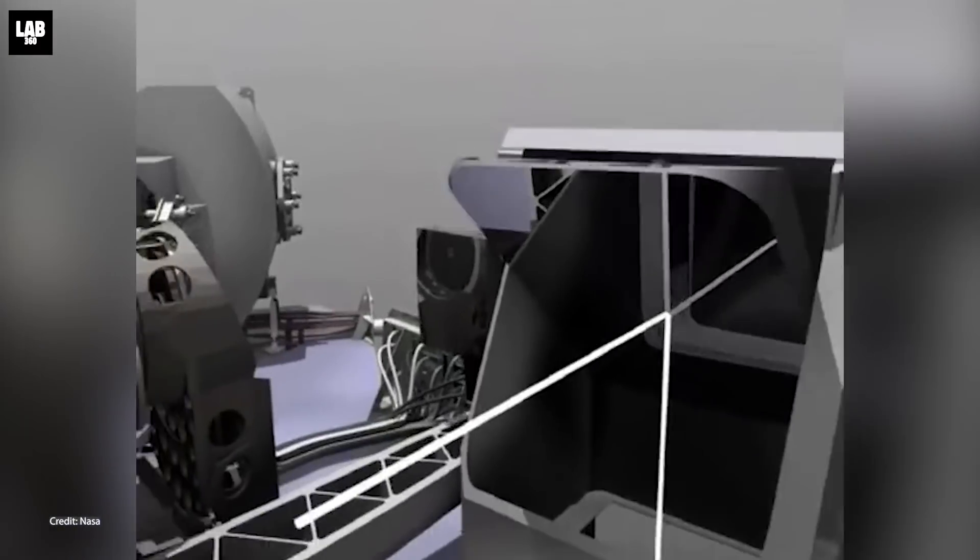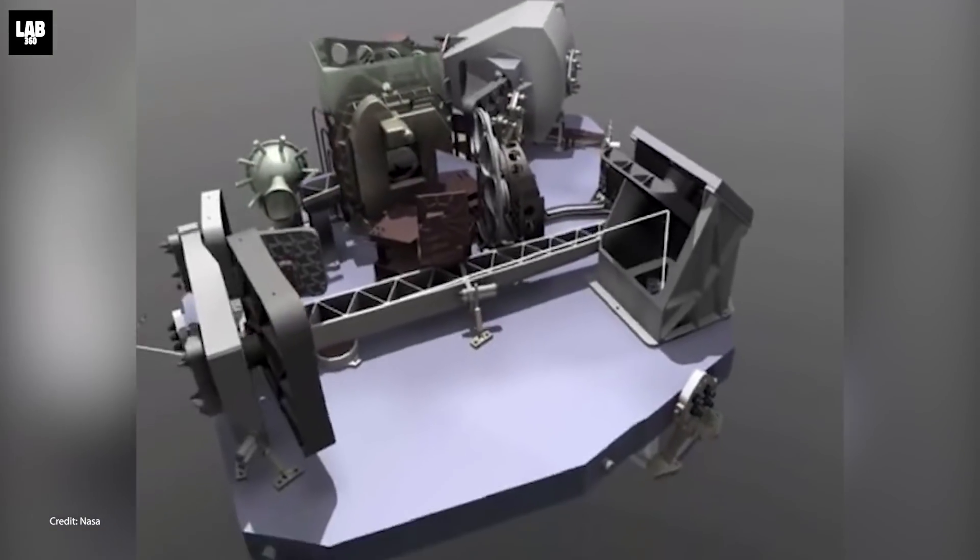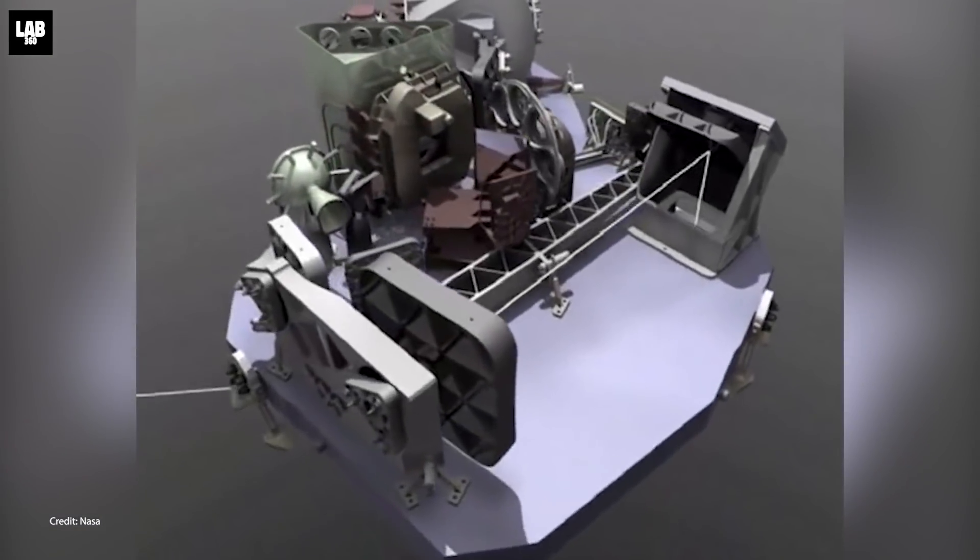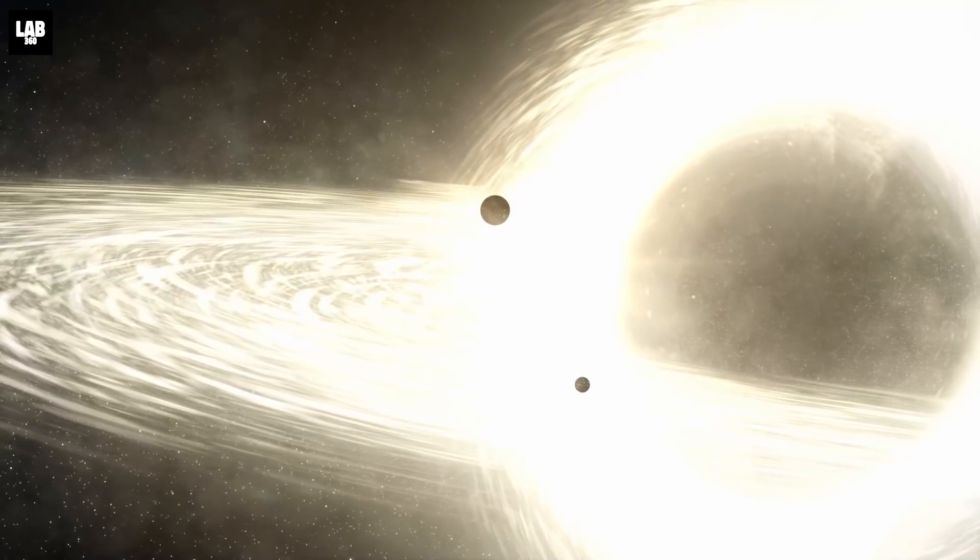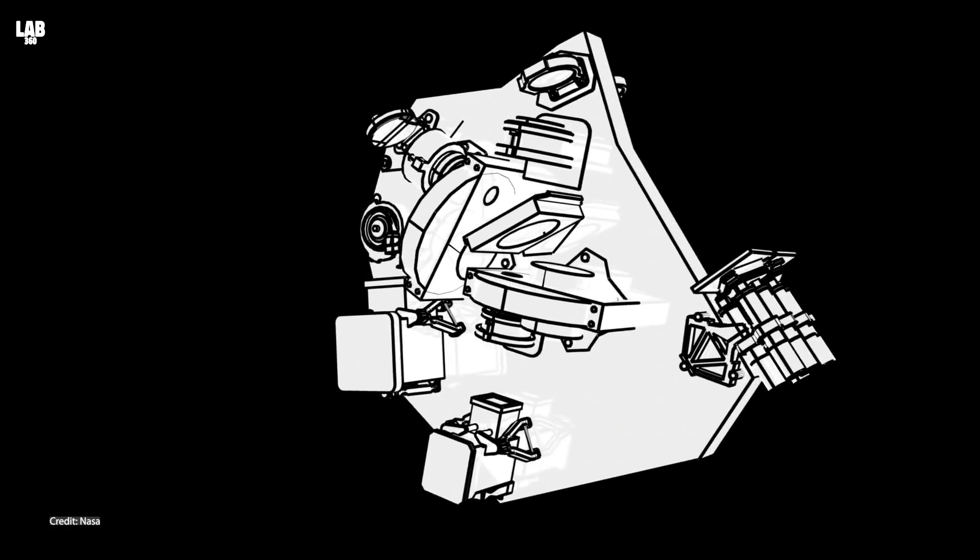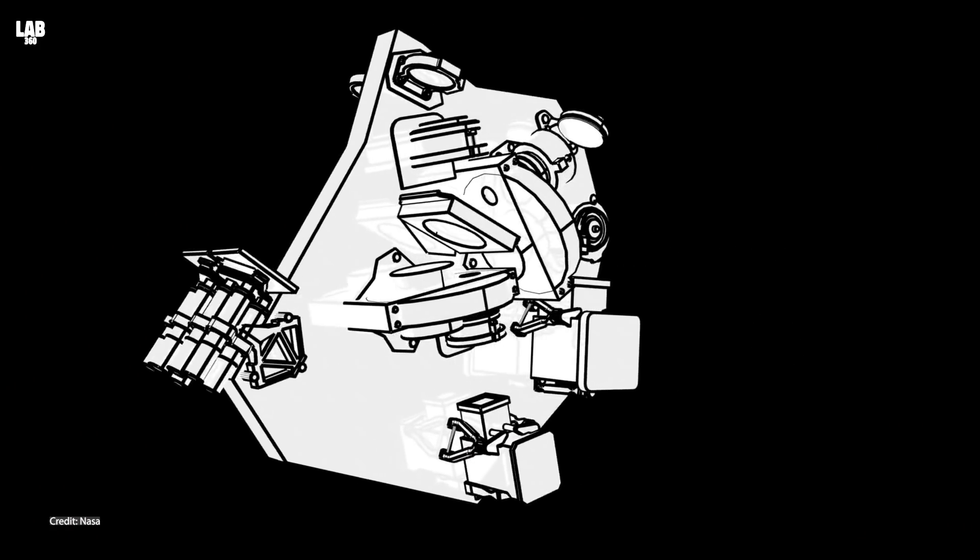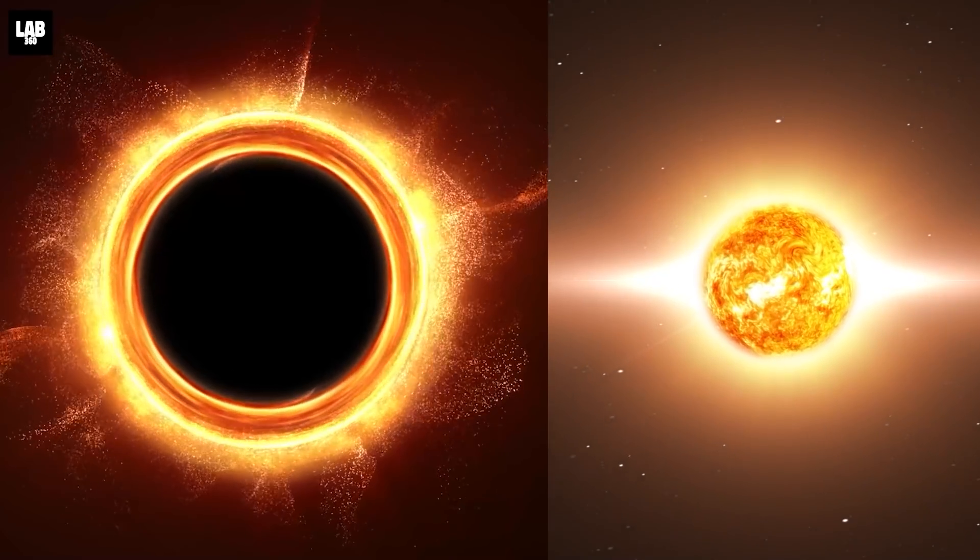Space telescopes like the JWST, equipped with specialized equipment, can aid in the discovery of black holes. Their special instruments can see how stars in close proximity to black holes behave differently from other stars.